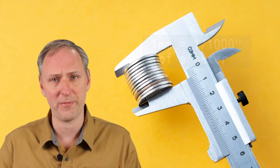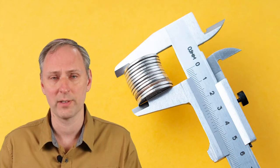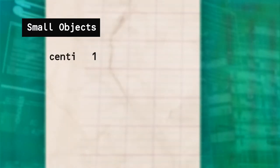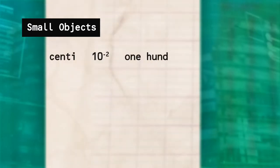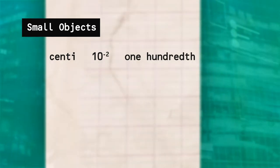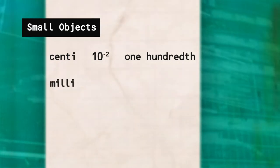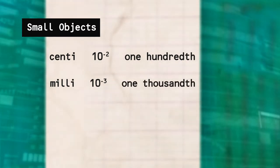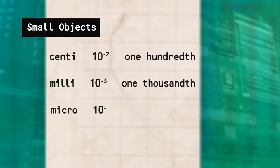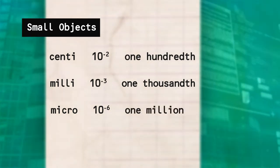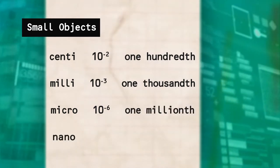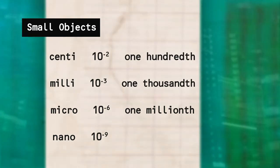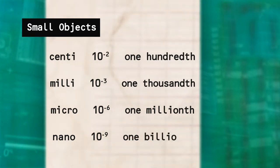There are many standard prefixes we can use with metric units. For small objects that you may be used to measuring in inches, we use the prefix centi for 1 times 10 to the negative two or one-hundredth. Slightly smaller is the prefix milli, meaning 1 times 10 to the negative three or one-thousandth. Next comes micro, 1 times 10 to the negative six or one-millionth, followed by nano for 1 times 10 to the negative ninth power or one-billionth.